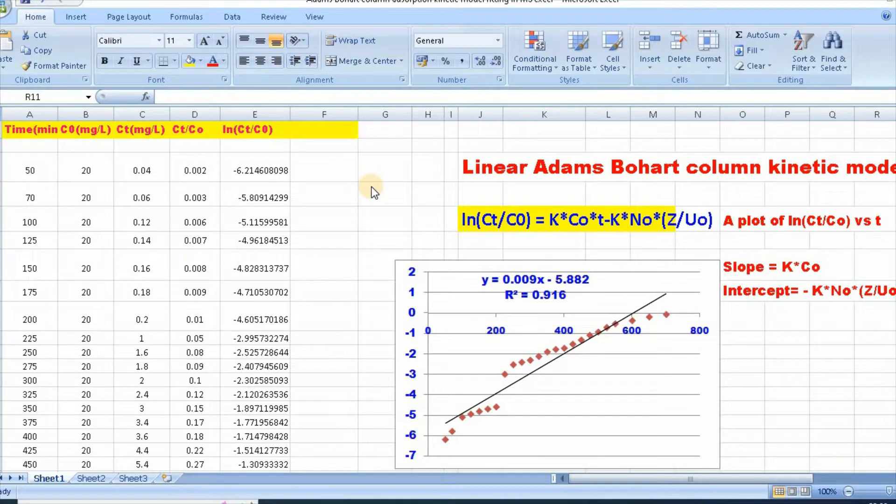Well, linear Adams-Bohart column kinetic model can be written as ln(Ct/C0) equal to kC0t minus kn0z divided by u0.